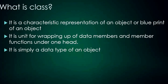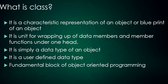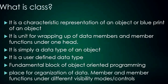At the simplest level, a class is a data type of an object, or more simply, a user-defined data type. It is a fundamental block of object-oriented programming. It can also be defined as a place for organization of data members and member functions under different visibility modes. In summary, a class is simply a characteristic representation or a blueprint of an object.